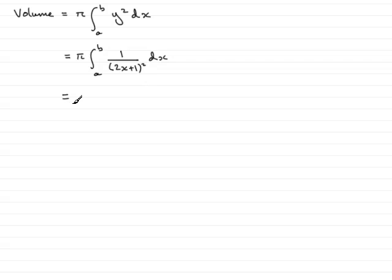So if I'm going to do it by recognition, what I would want to do is bring the (2x plus 1) all squared up to the top, so that would be integrating from a to b of (2x plus 1) to the power minus 2, integrated with respect to x.